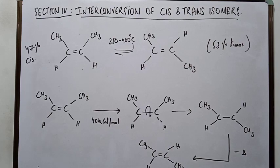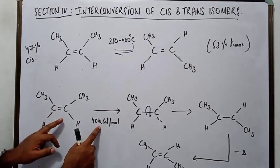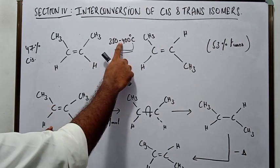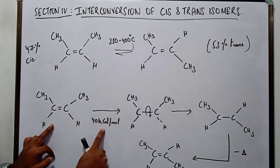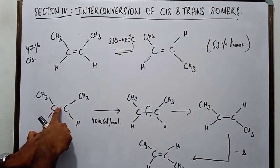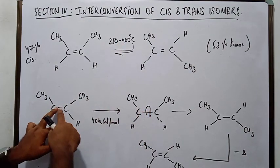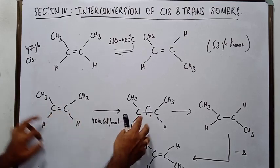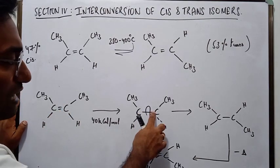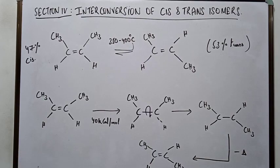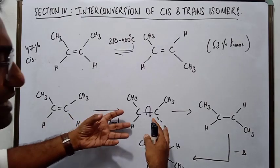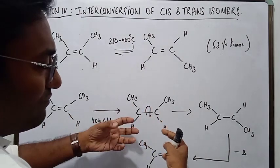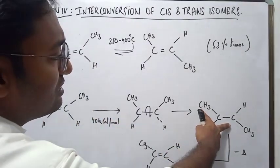If this kind of energy is provided from an external source, then what would happen? This bond would break. When this double bond or pi bond breaks, free rotation around the carbon-carbon single bond is actually possible, so it rotates.